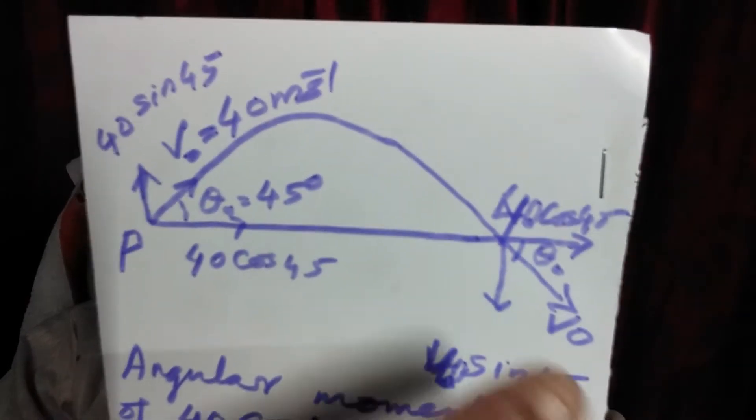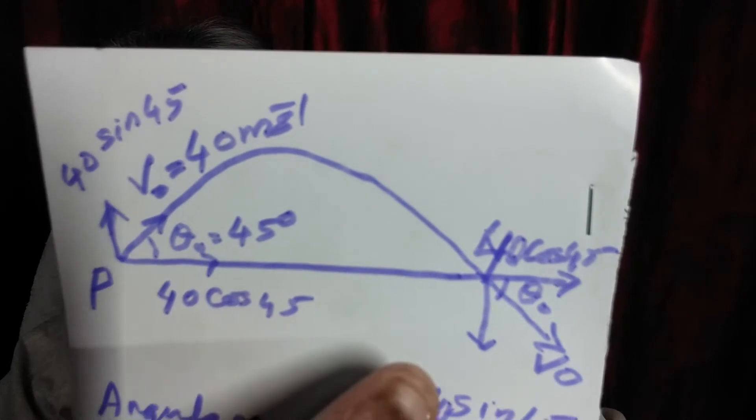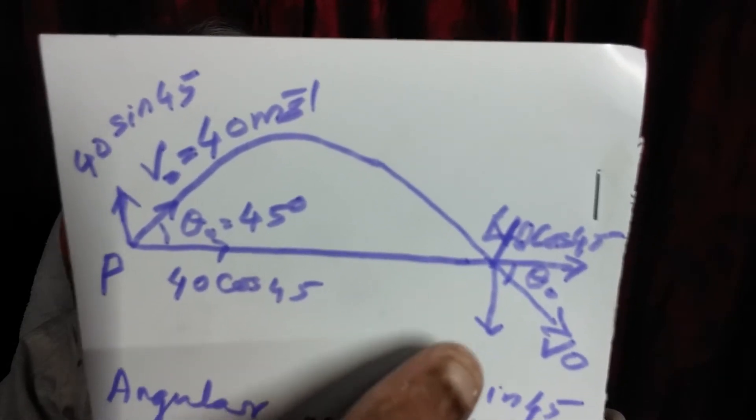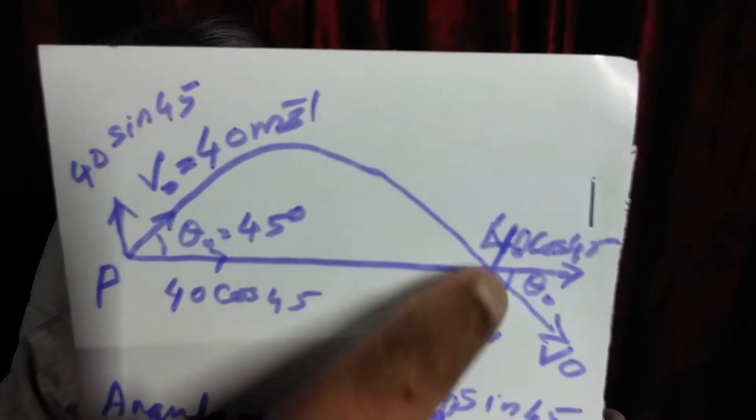What is the angular momentum of the ball? The component is m into 40 sin 45, the velocity.